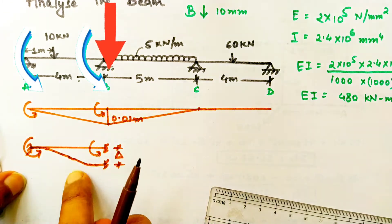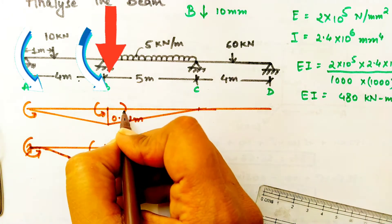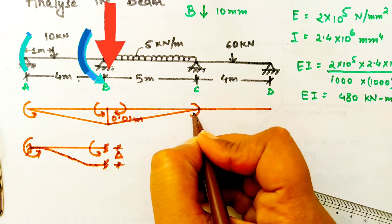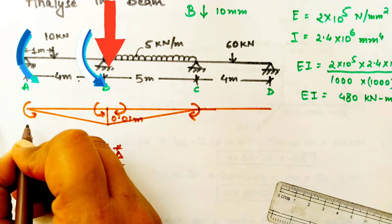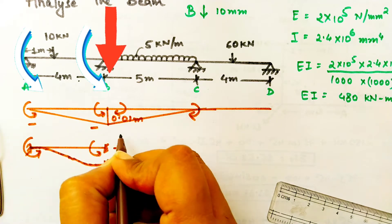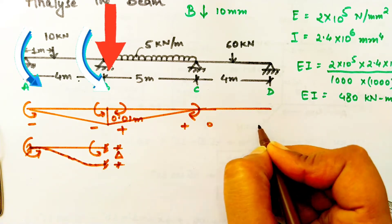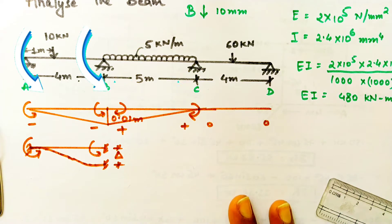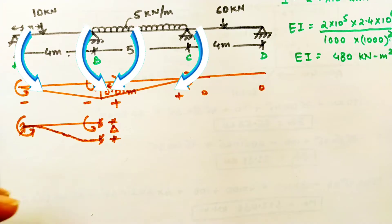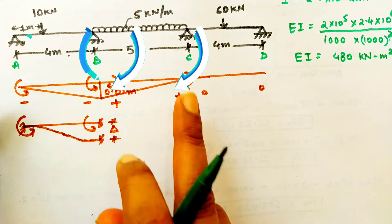The left end is trying to pull the beam up and this moment on the right side came up because of sinking of the support. The opposite will be generated on the BC panel, so the signs will be negative, negative, positive, positive. For CD the moments are zero because no moments are generated due to sinking.